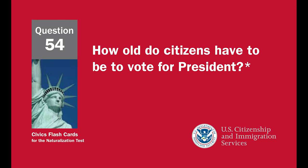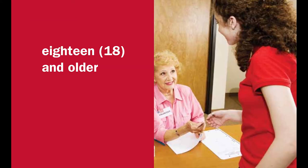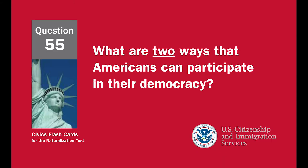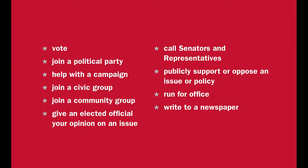How old do citizens have to be to vote for president? Eighteen and older. What are two ways that Americans can participate in their democracy? Vote, join a political party, help with a campaign, join a civic group, join a community group, give an elected official your opinion on an issue, call senators and representatives, publicly support or oppose an issue or policy, run for office, or write to a newspaper.